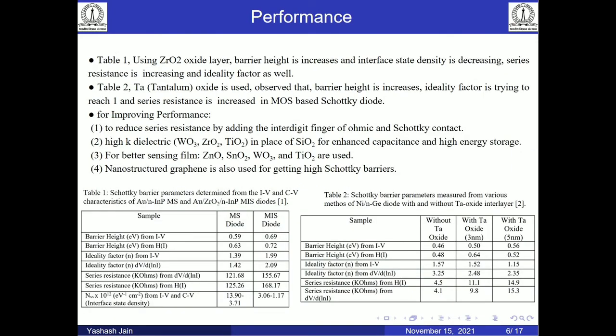Comparing the MOS-based structure with the simple metal-semiconductor Schottky diode using Table 1 and Table 2, we find that the MOS-based device provides higher barrier heights and the ideality factor approaches unity. The disadvantage is higher series resistance, which can be addressed by adding interdigitated fingers of ohmic and Schottky contacts. In Table 1, zirconium oxide was used, and in Table 2, tantalum oxide was used, giving different values of barrier heights, series resistance, and ideality factors. For better sensing and enhanced capacitance, high-k dielectrics are used in place of silicon dioxide, and nanostructured graphene is also used to achieve a high Schottky barrier.